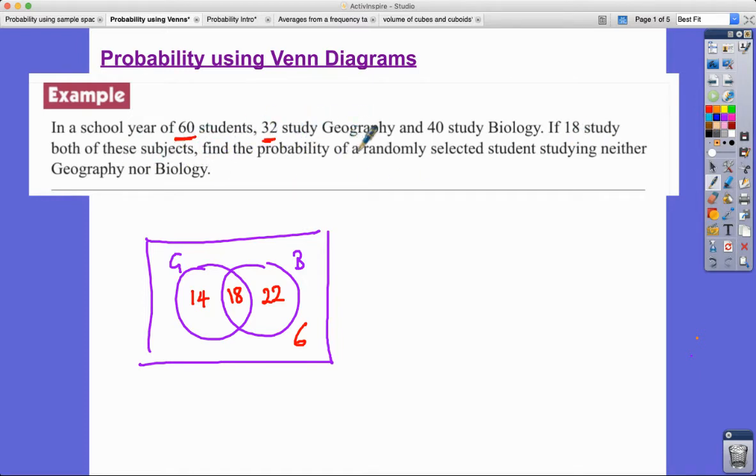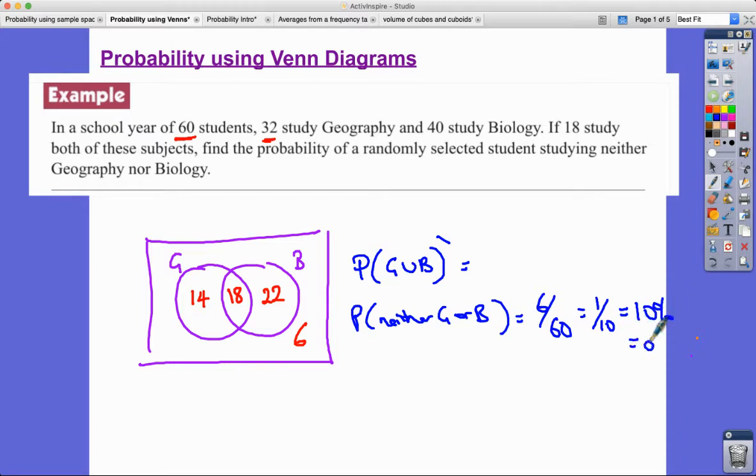And actually that's the question that I might then ask: if 18 do both, find the probability of a randomly selected student studying neither geography nor biology. So the probability of the complement of the union of G and B, or if you just want it in words neither G or B, is going to be 6 out of 60 or 1 in 10 or we could have 10 percent or we could have 0.1. It doesn't matter if you write it as a fraction, decimal, or percentage.